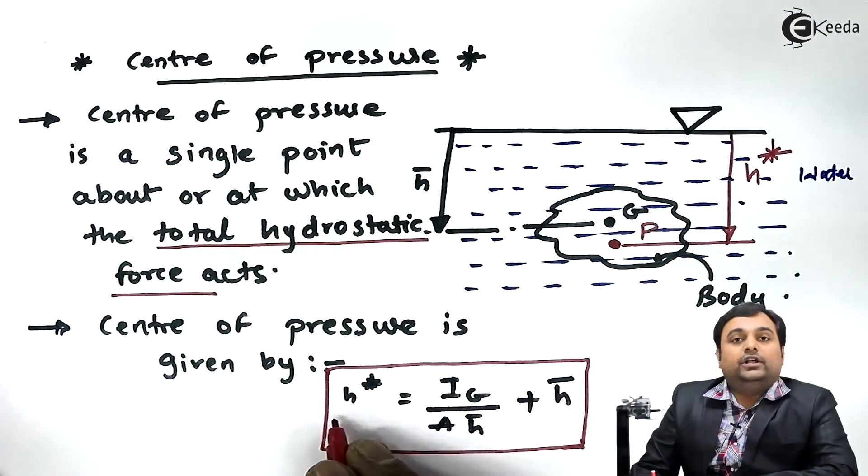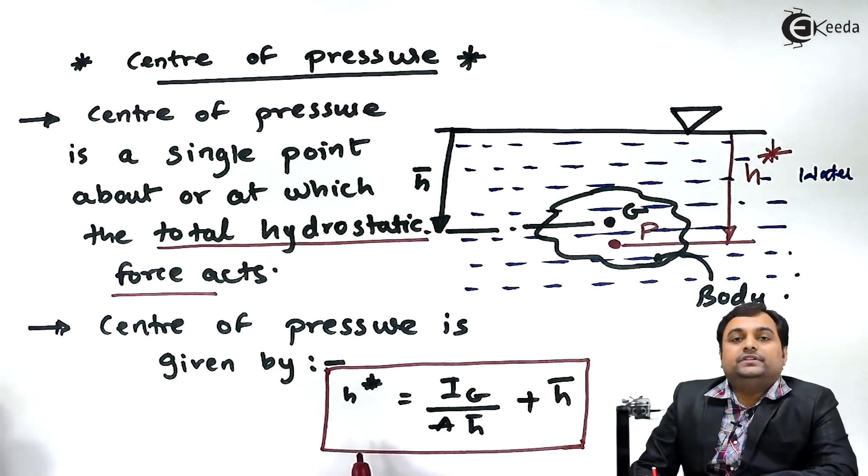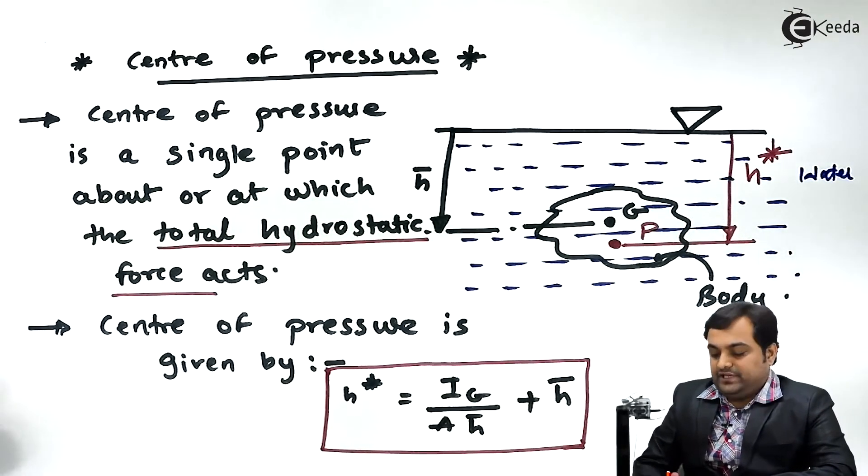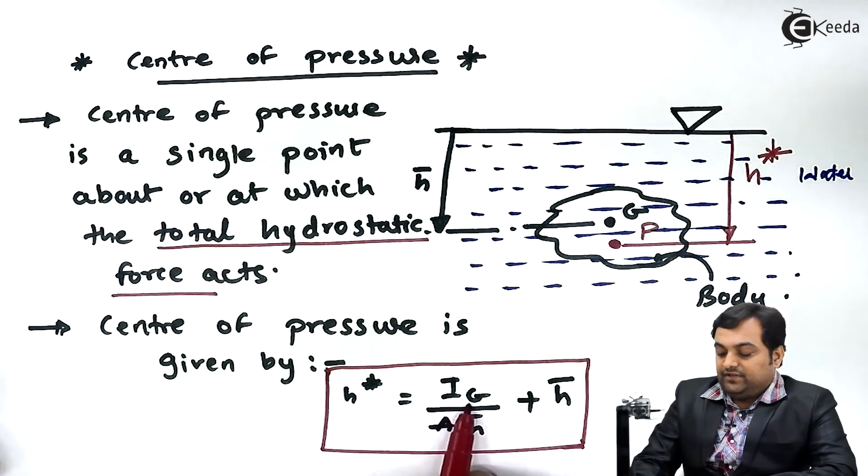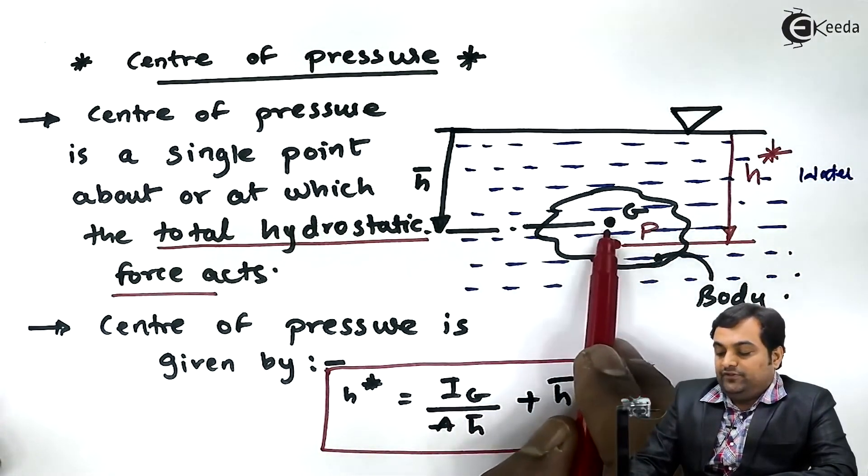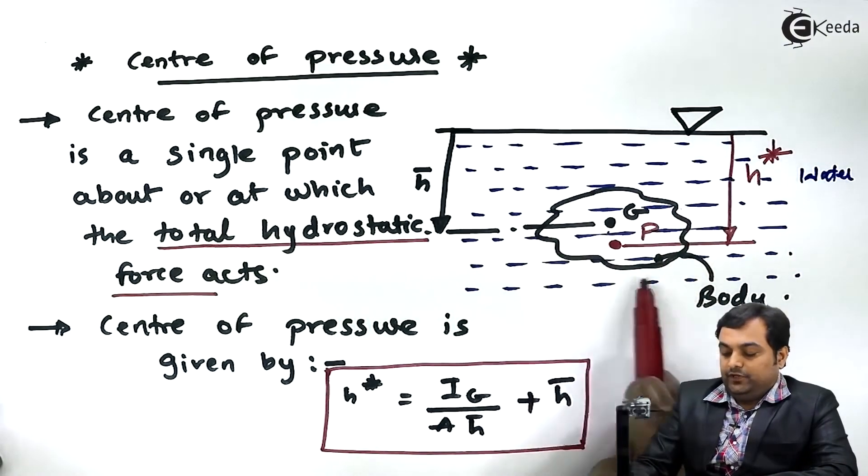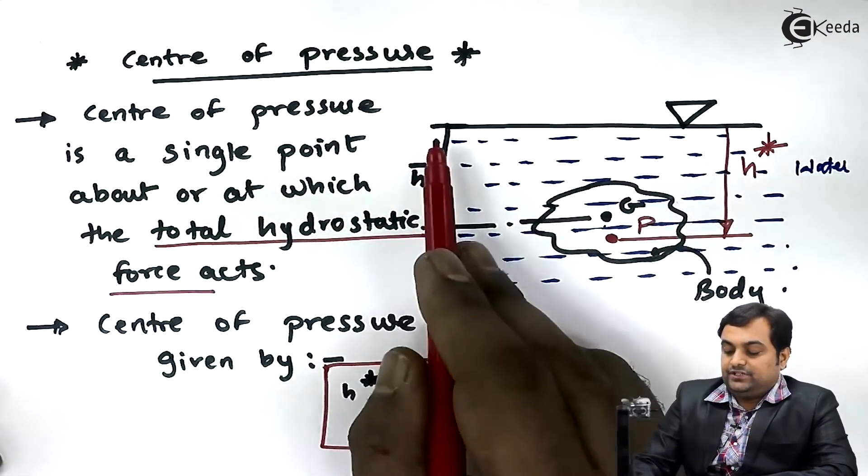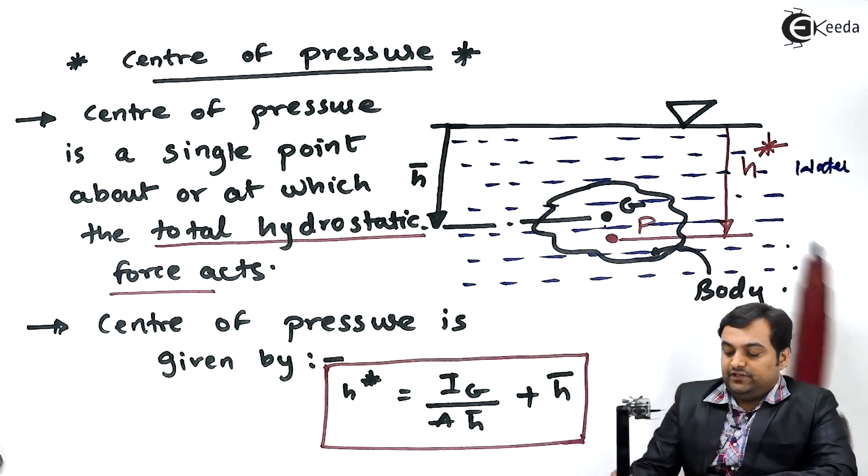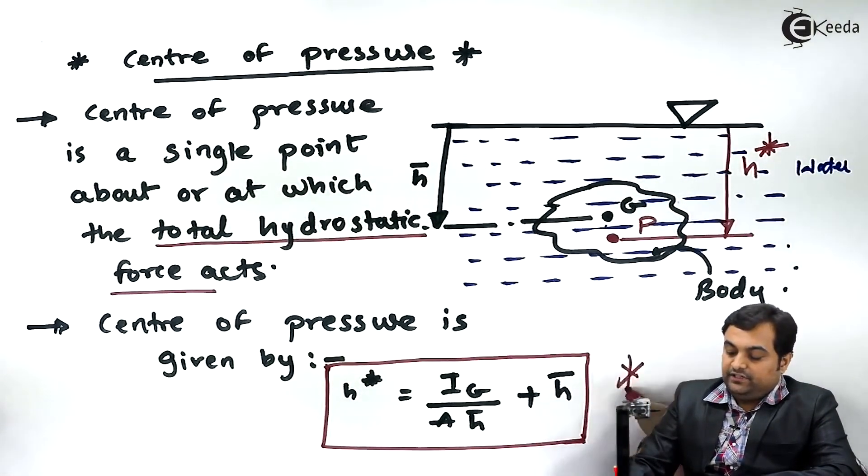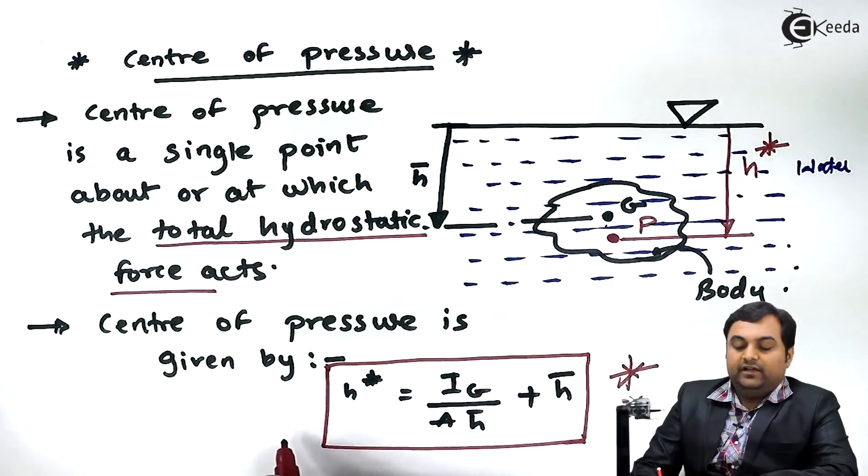Here I have written the formula to calculate the center of pressure - that is, it is a single point where the hydrostatic force acts. Here IG is the moment of inertia about the centroid G, capital A is the area of this body, H bar is the distance of centroid from the free surface of liquid. So once we know all the values we can easily get center of pressure from this formula.